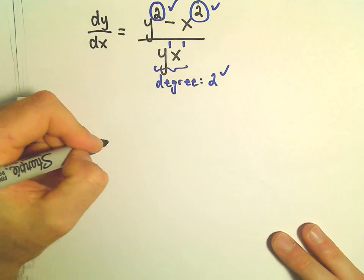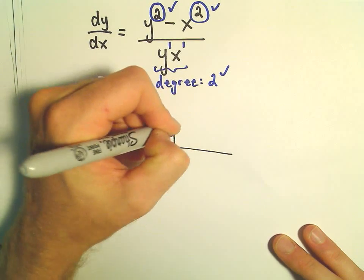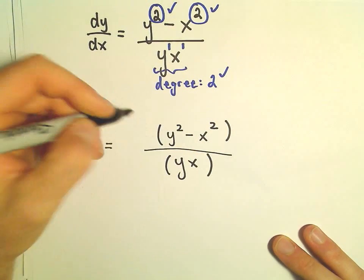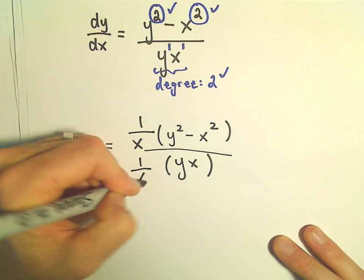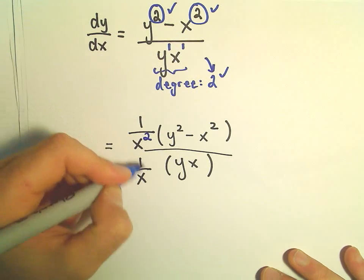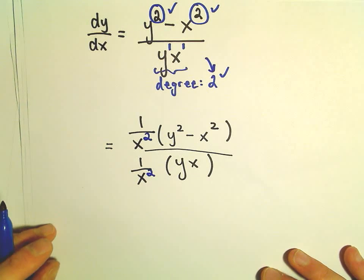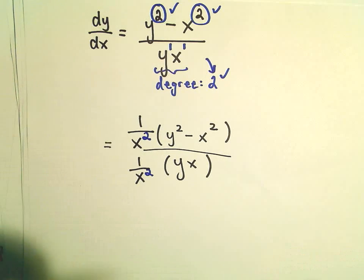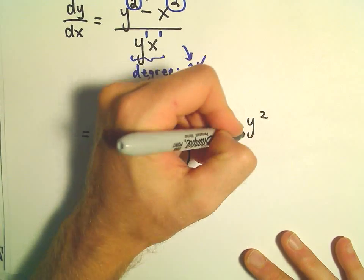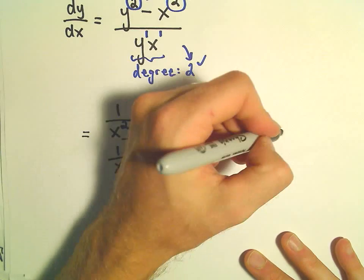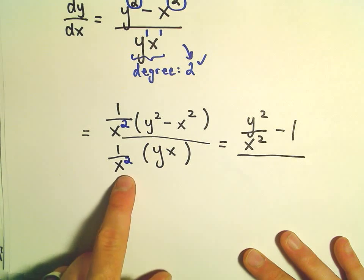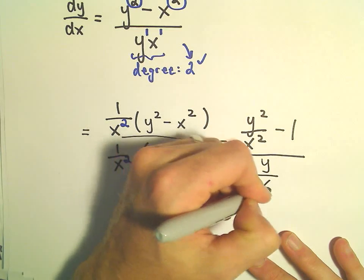The way that we solve this is we're going to take our equation — y squared minus x squared over y times x — and multiply by 1 over x to some power, where the power is whatever the degree is. So we multiply by 1 over x squared in both the numerator and denominator. In the numerator, this simplifies to y squared over x squared minus 1. In the denominator, y times x over x squared leaves us with y over x.